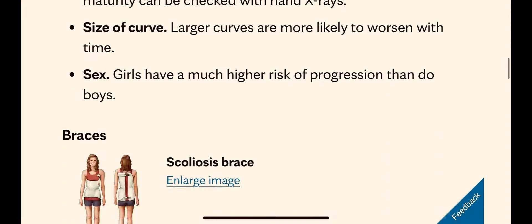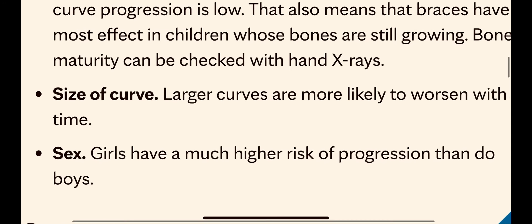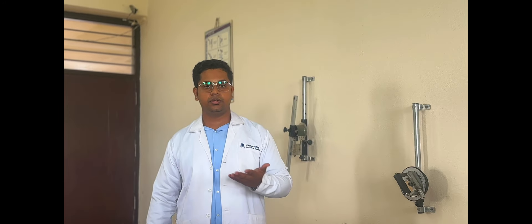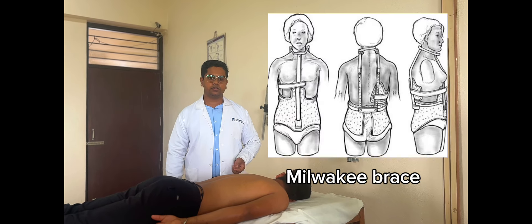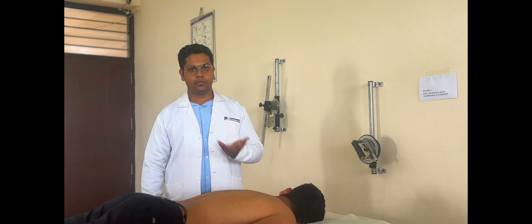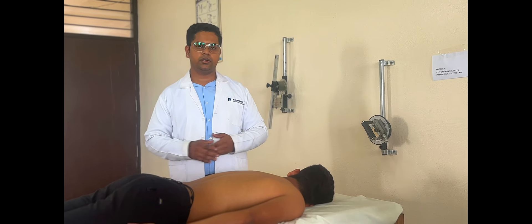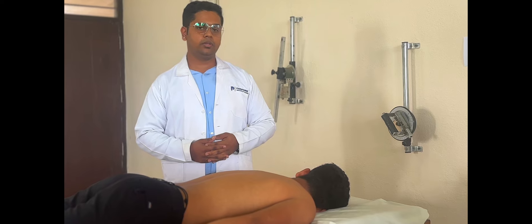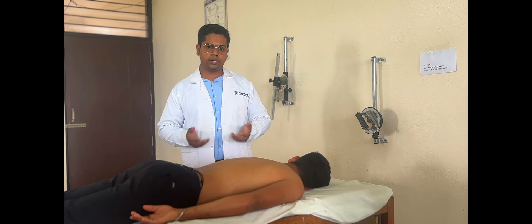As severity depends on the angle of curvature, management also varies accordingly. For mild to moderate scoliosis, conservative treatment focuses on physiotherapy and bracing — specifically a CTLSO, also known as the Milwaukee brace. For severe scoliosis, surgical intervention is used, including lung anectomy, spinal fusion, and spinal osteotomy. Physiotherapy focuses on reducing spinal deformity and strengthening paraspinal muscles, with IFT and TENS used for pain management.